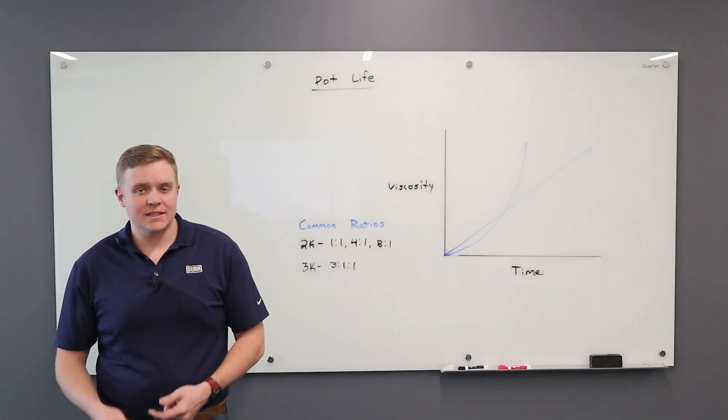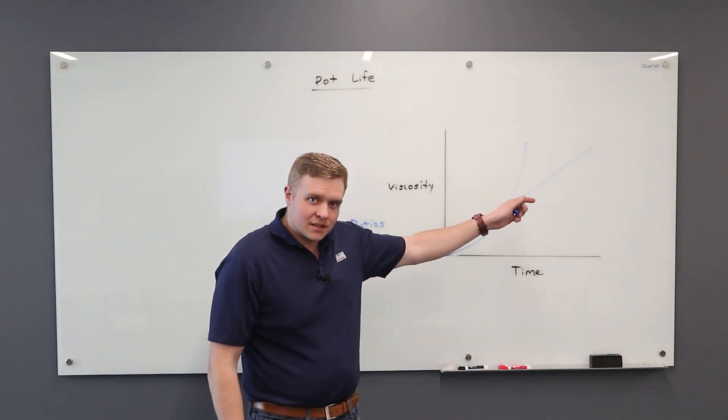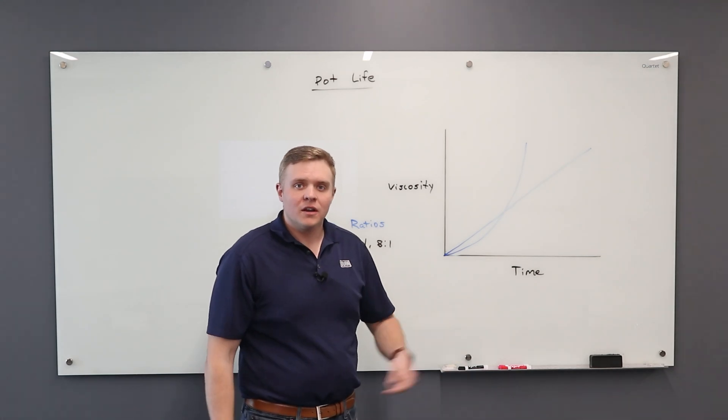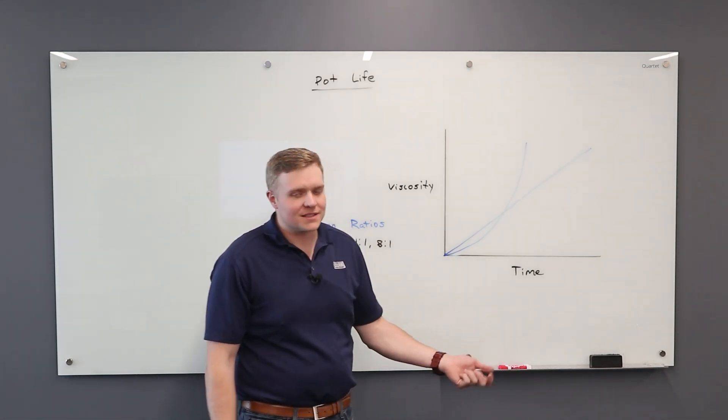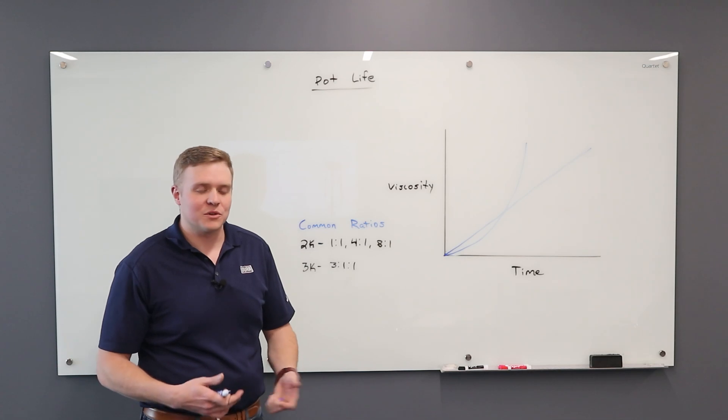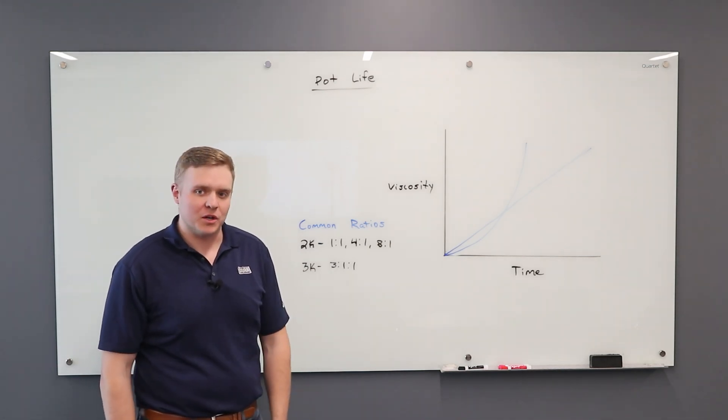One of the common fallacies that I see in the industry is that as that viscosity increases, we just add reducer so it's sprayable for longer, giving us longer pot life. That's not really the case. Your pot life is what it is. It's the chemical reaction. Adding reducer doesn't necessarily slow that down. It just makes it sprayable for longer.